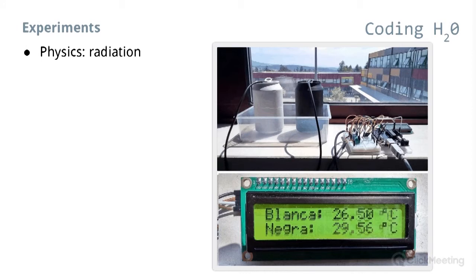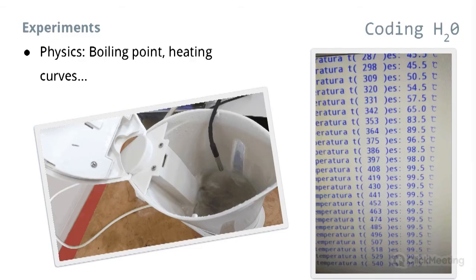We also carried out an activity about radiation. We used a black and a white can with a temperature sensor, and as you can see the temperature reading in the white can was 26.50 degrees while in the black one it was higher — 29.56 degrees. Another activity was the boiling point of water and heating curves. We used a boiler and the temperature sensor, doing this activity with the Raspberry Pi programmed in Python. At the end of the experiment the temperature was constant and very close to 100 degrees.